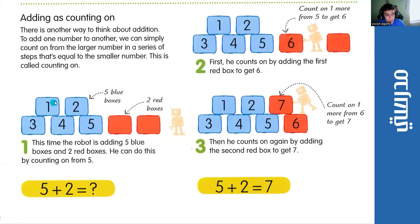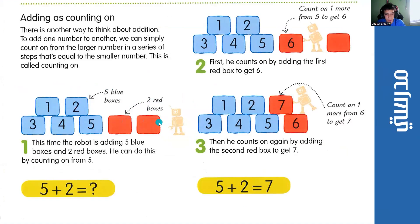Here we have squares. We have 1, 2, 3, 4, 5 blue boxes, or squares, and 1, 2 red boxes, or squares. So, to add them, we just count them together: 1, 2, 3, 4, 5, 6, 7. So, 5 plus 2 equals 7.